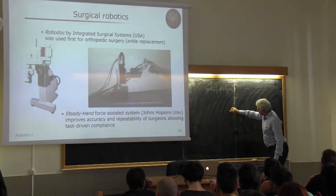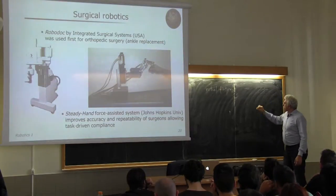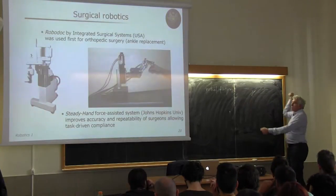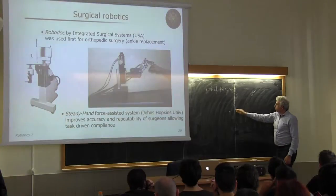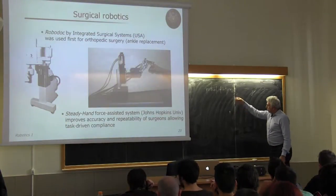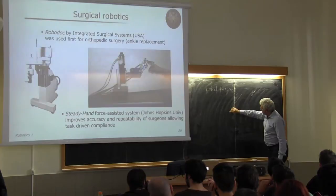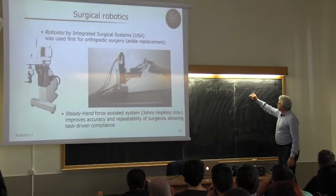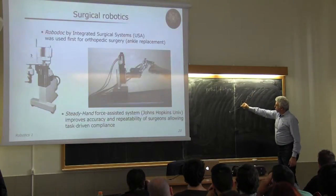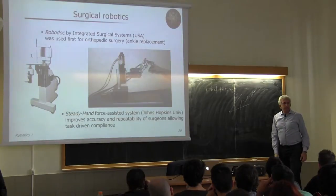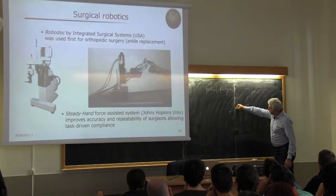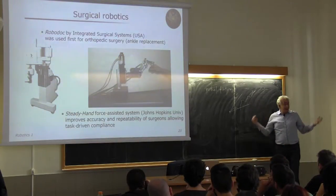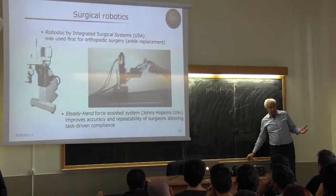The Steady Hand System uses what are called virtual fixtures. Suppose you have to reach a certain point with a tool — you can design a system such that you are constrained to some motion. If you try to command a motion that exceeds a boundary, you are forced to move along that boundary until you converge to the final point. You can design virtual fixtures of any geometry.